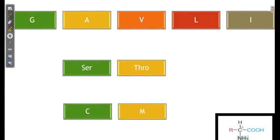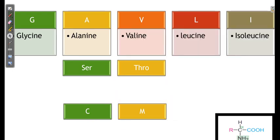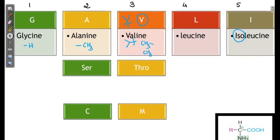Let us go ahead and recall the structures. We have GAVLI — glycine, alanine, valine, leucine, and isoleucine — numbered one through five. One interesting point: in the case of isoleucine there is nothing like 'iso' in terms of a straight chain. For glycine the R group is hydrogen; for alanine it is methyl; for valine I take the advantage of the letter V shape to extrapolate — it gives us an isopropyl group. We can remember it by the V shape as well.